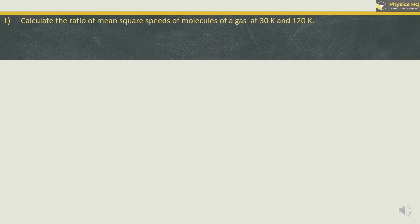Calculate the ratio of mean square speed of molecules of a gas at 30 Kelvin and 120 Kelvin. Mean square speed is given by 3RT/M₀. For a given gas, R and M₀ will be constant, so we can write that mean square speed is directly proportional to temperature.